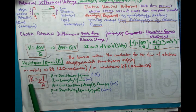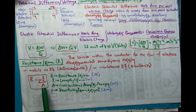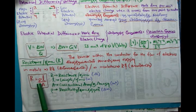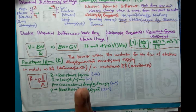So resistance depends on length of the conductor, cross-sectional area of the conductor, temperature of the conductor, and the nature of material of the conductor. Four things.